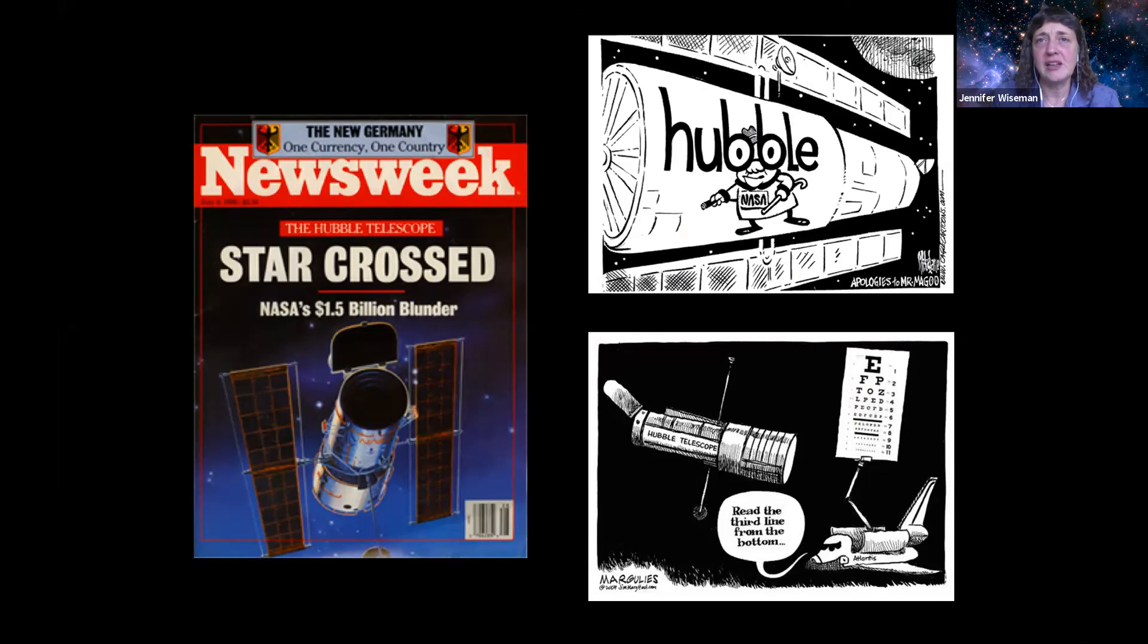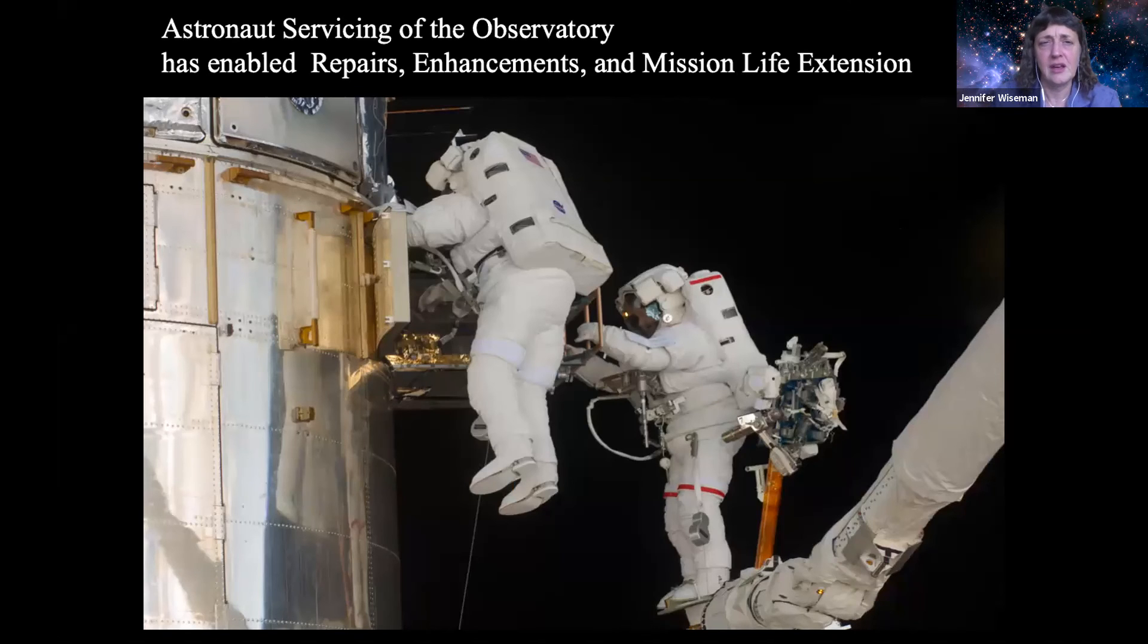However, already from the beginning, there had been a plan to send the space shuttle back to Hubble for repeated servicing missions. Astronaut servicing of the observatory has in fact enabled repairs, enhancements, and mission life extension. The whole design of the Hubble Space Telescope required an intimate pairing with space shuttle missions, not only for its original launch, but to keep it operating and facilitated for years to come. And so the first planned servicing mission was quickly focused on doing something to repair the vision of Hubble. It seems that the Hubble mirror was nicely produced, but to a slightly wrong shape, producing something called spherical aberration in the images.